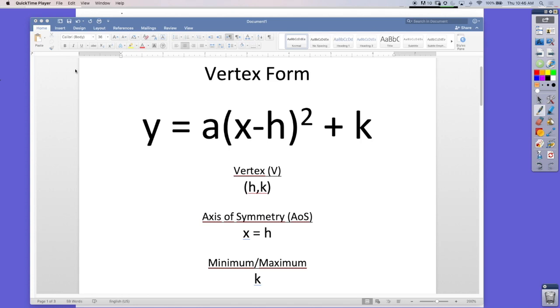You're going to want to write down some notes for yourself. We've been exploring this already, but it's really important to know that (h, k) is the vertex. The axis of symmetry, which I'm going to write as AOS, is x = h, and the maximum or minimum of this parabola is always k.